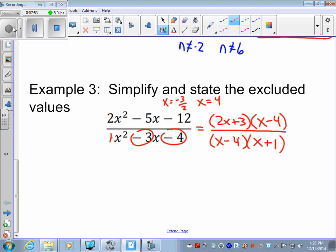So after this, we state our excluded values. What makes the denominator 0? If x equals 4, that would make the denominator 0. If x equals negative 1, that would make the denominator 0. So therefore, we cannot have that happen. So now we simplify the numerator and denominator. x minus 4. Those are the same. They cancel out. You get 2x plus 3 over x plus 1 with x cannot equal 4 and negative 1.